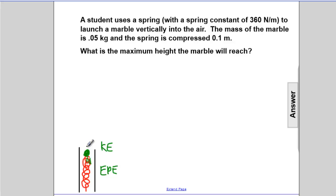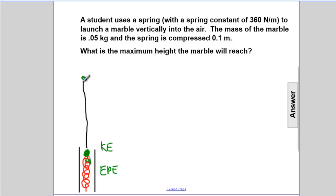That projectile is going to ascend all the way up until it runs out of gas at the top. At that highest location, its KE would have been transformed completely into gravitational potential energy, GPE.